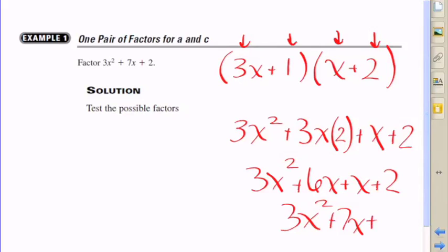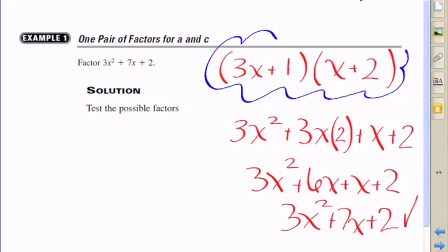And so therefore my original guess is correct. 3x + 1 times x + 2 is the pair of linear expressions that is the factored form of 3x² + 7x + 2.